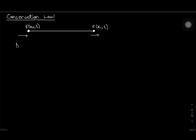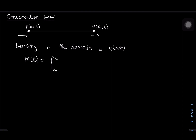If we have such a thing going on within this one-dimensional space, then I can write the density in the domain as u(x, t). If I want to know the total amount of substance — the mass — at any point in time, that is going to be given by the integral from x₀ to x₁ of the density u(x, t) dx, because the substance is moving from x₀ to x₁.